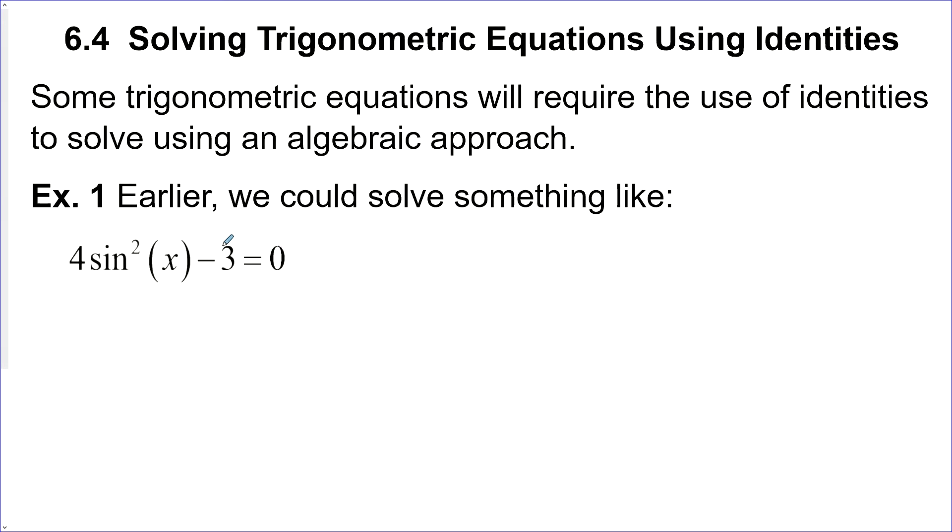We've solved some simple trigonometric equations before. Let's do this one as a review. So I just need to do some algebra here to isolate sine x. So let's add 3 on both sides and then divide by 4 on both sides and then take the square root of both sides.